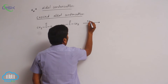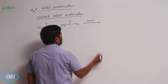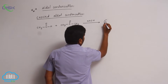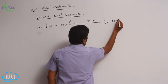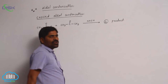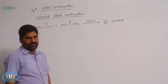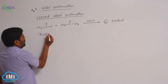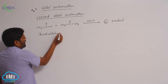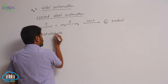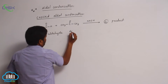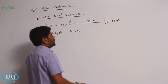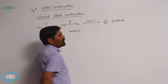In the presence of base — sodium hydroxide — four products are formed. Earlier, only one product is obtained from acetaldehyde self-condensation and one product from acetone self-condensation. Now, when we take two different units of carbonyl compounds — one is acetaldehyde and another is acetone — how many products are formed? Four products are formed.